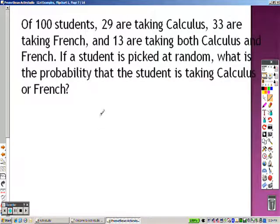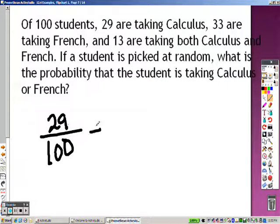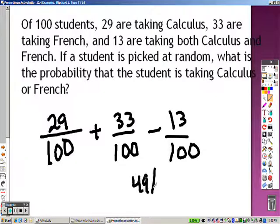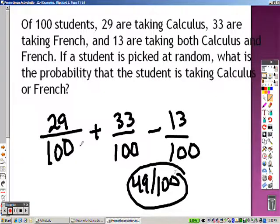So out of a hundred students, 29 are taking Calc, 33 are taking French, and 13 are taking both Calculus and French. If a student is picked at random, what is the probability that a student is taking Calculus or French? Well, out of a hundred students, how many are taking Calculus? Twenty-nine. Or means addition. How many are taking French? Thirty-three. You have to take away how many are doing both because they're being double counted, which is thirteen out of one hundred. So twenty-nine plus thirty-three minus thirteen, forty-nine out of a hundred is what we have as the answer. Forty-nine out of a hundred is probably having someone who takes Calc or French.